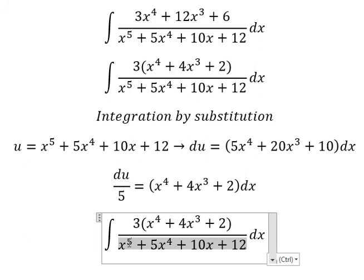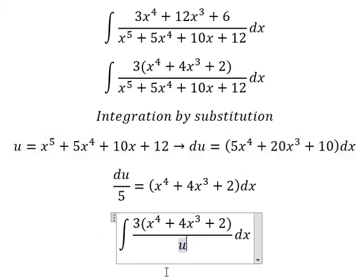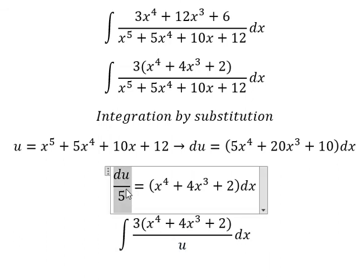So this one in here we change by u. x^4, 4x^3, and number two dx we change by this one, which is du/5.